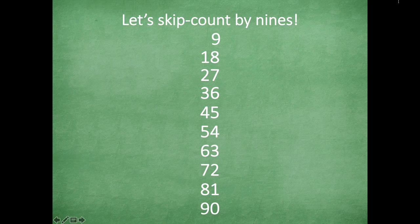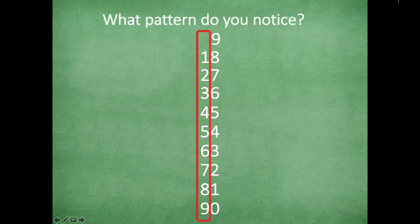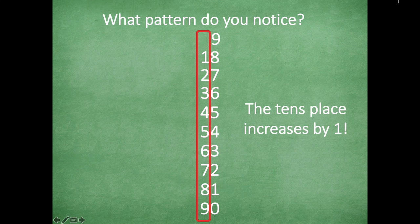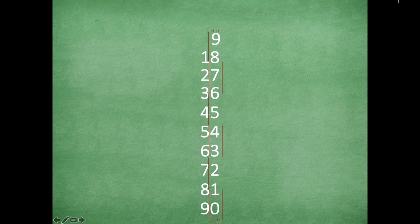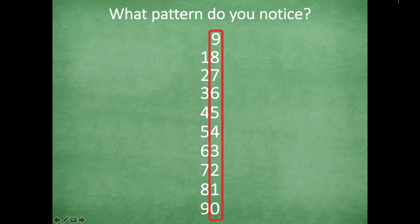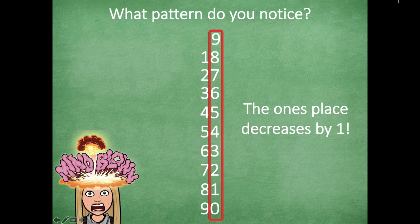Let's look at the tens place — what pattern do you notice just in the digits in the red box? The tens place increases by one. If you're starting at the top going down, it increases by one; if you're starting at the bottom, it decreases by one. Mind is blown! Now let's look at the ones place — the ones place decreases by one. Mind blown again — that's pretty amazing!